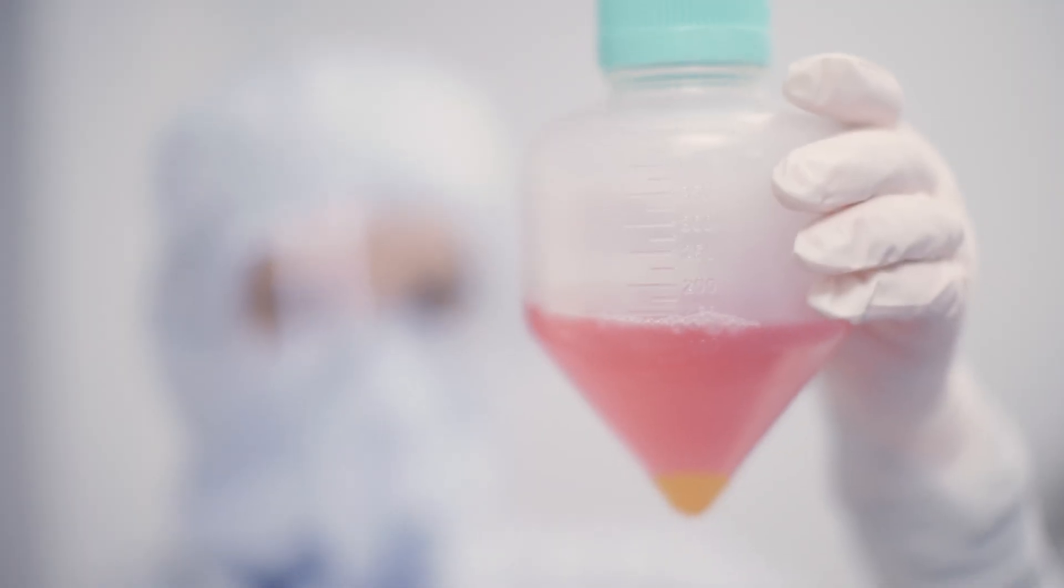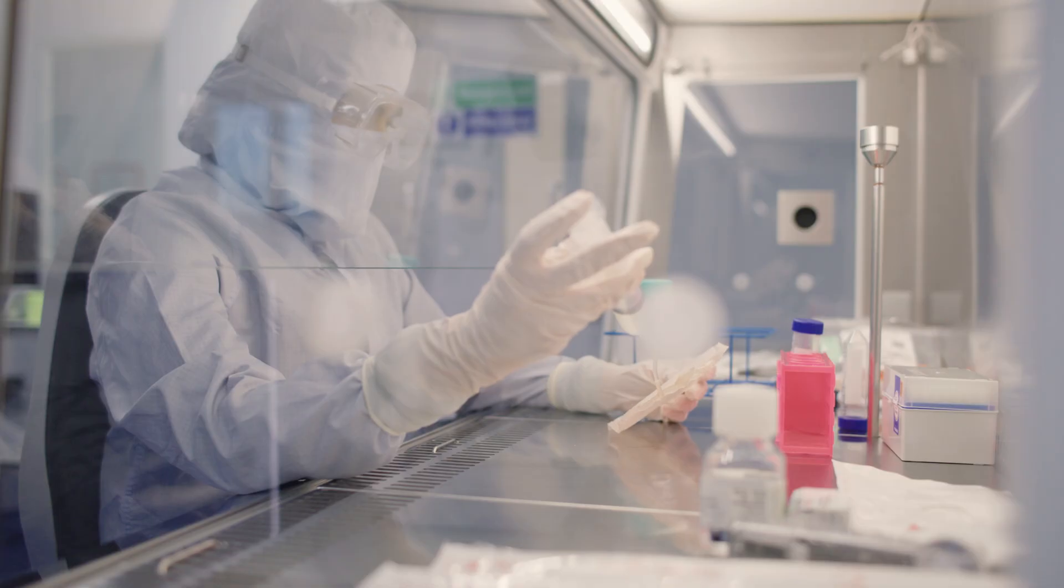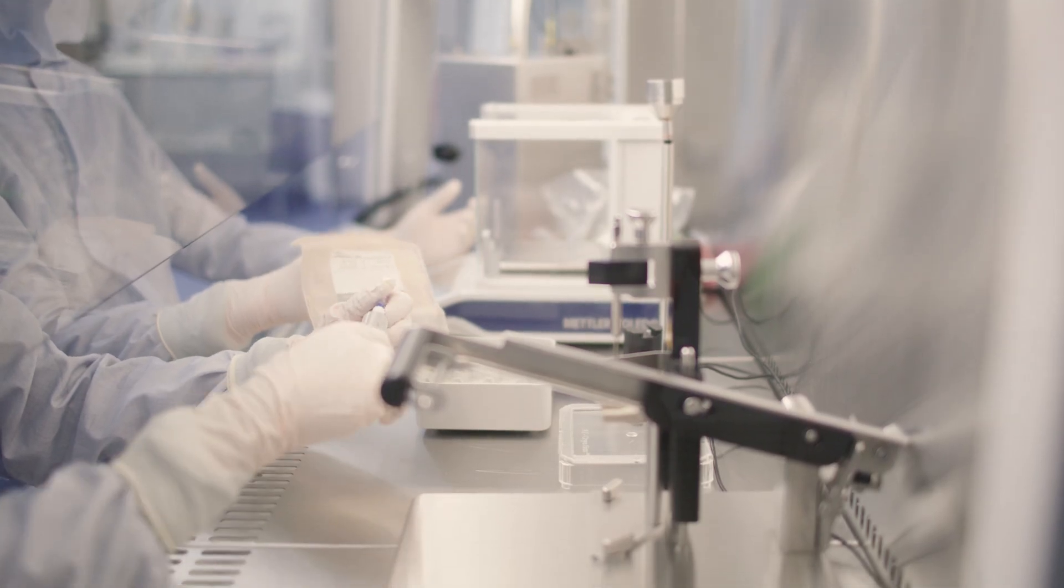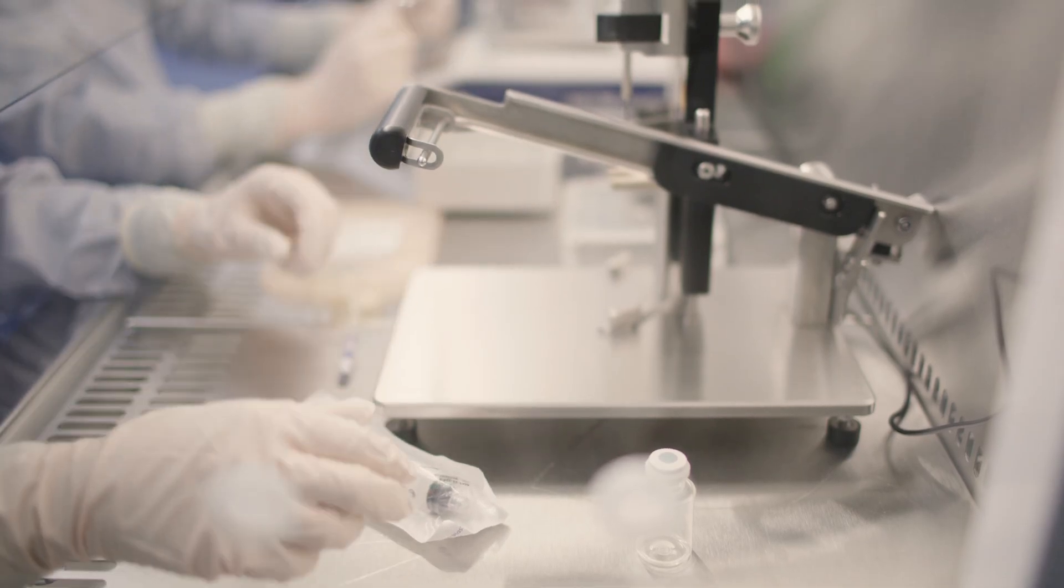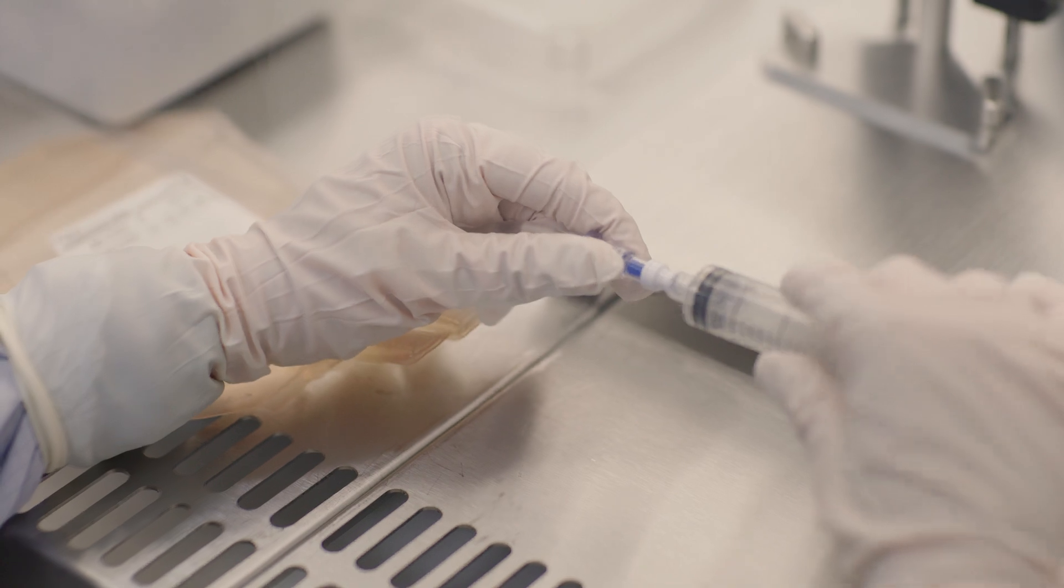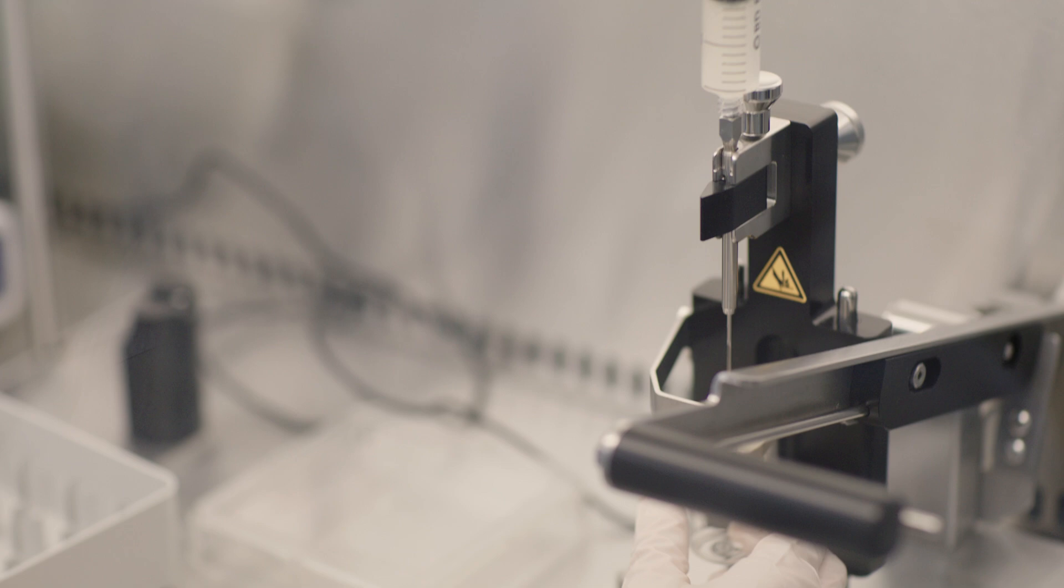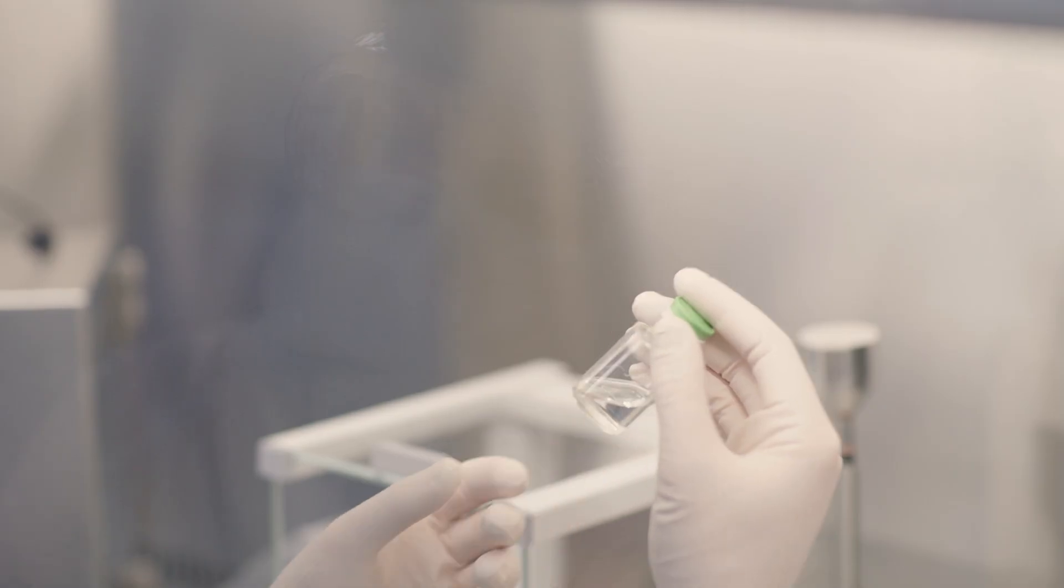Once harvested, additional materials are added to the solution to help safely preserve the cells. The cells are then filtered and filled into preassembled and sterilized vials, inspected and then labeled. A small sample of cells are kept for testing to make sure they meet specific parameters and are functioning properly.